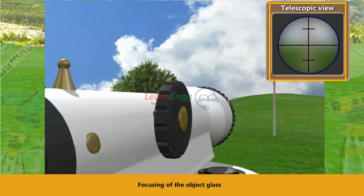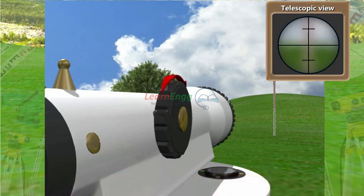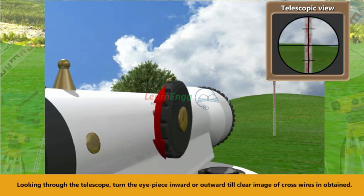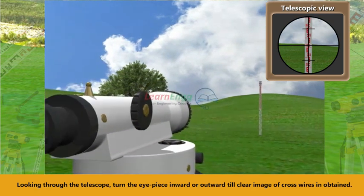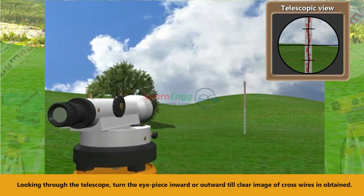Focusing of the object glass. Looking through the telescope, turn the eyepiece inward or outward till clear image of cross wires is obtained.